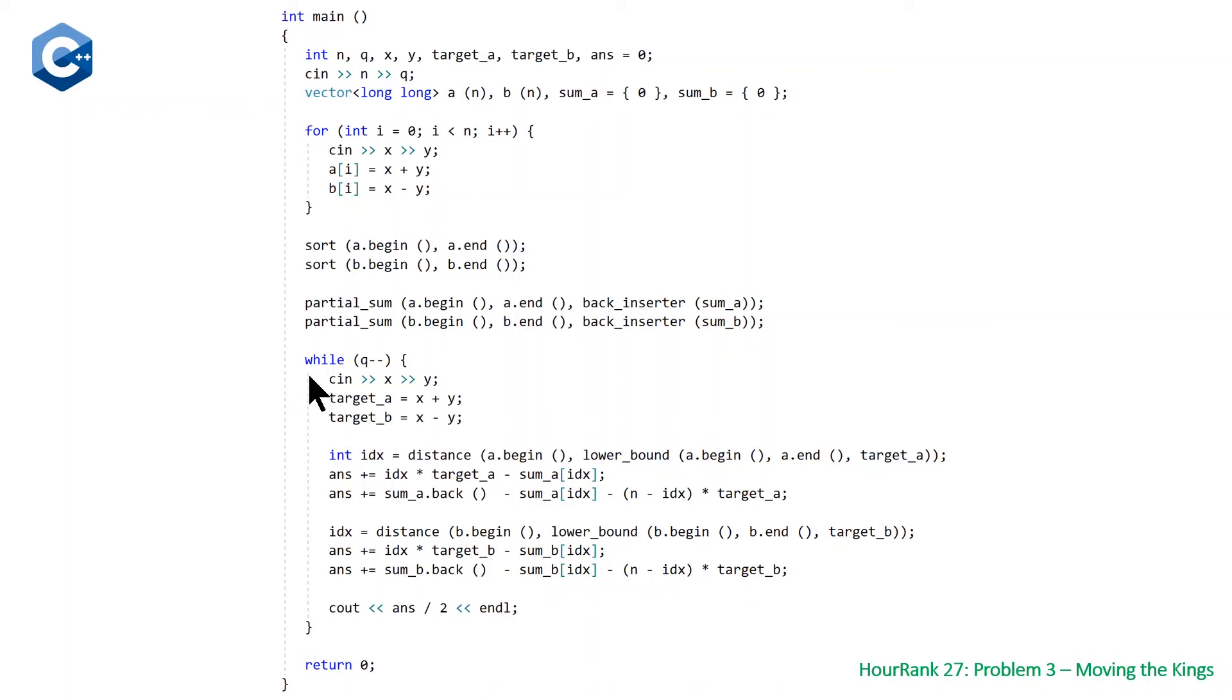Once we've done this, we have Q queries to get through. So we have a while loop, we're reading in our X and Y again, calculating our target A and our target B from our X and Y's the same way we did up here. Then we have our two binary function calls, two lower bounds. We're calling lower bounds and passing in our target value. And then from this, calculating the distance to get our index. Once we have our index, we just use the formulas that we showed before. So index times our target value minus the sum of our first index values. So that covers the values that are less than our target value. And for our values that are greater than our target value, we just calculate the sum of those values, which is the end of our sum A vector minus sum A index, and then subtracting from it n minus index times our target value. You basically do the exact same thing for both the A and the B values. Once you've done that, you just divide by two and you'll have your answer.